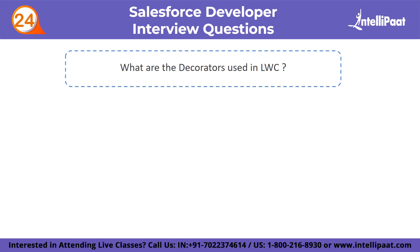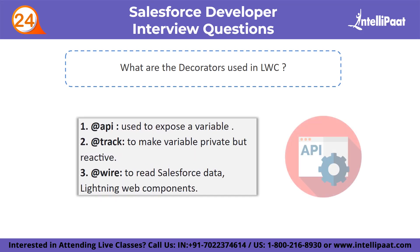Next question: what are the decorators used in LWC? First, @api, which is used to expose a variable. Next is @track, which is used to make variables private but reactive. The final one is @wire, which is used to read Salesforce data in Lightning Web Components.